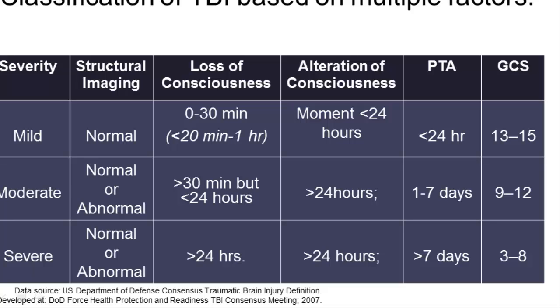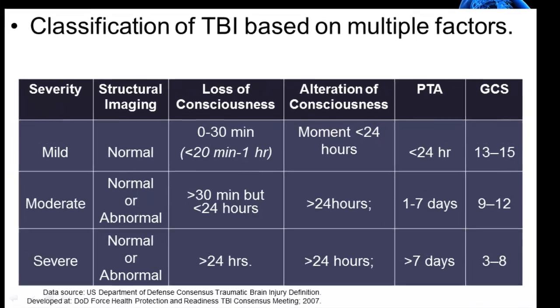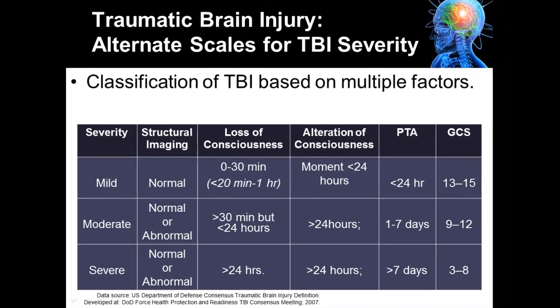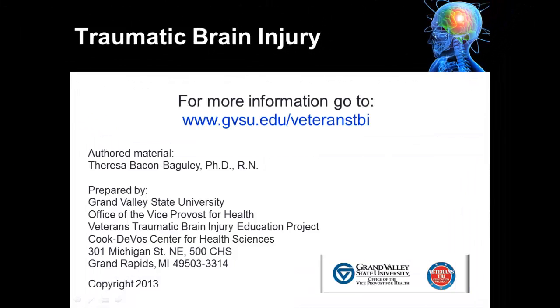The Glasgow Coma Scale for those individuals will also be about three to eight. This is the end of the traumatic brain injury lecture, which describes the definition of traumatic brain injury as well as types. Thank you.